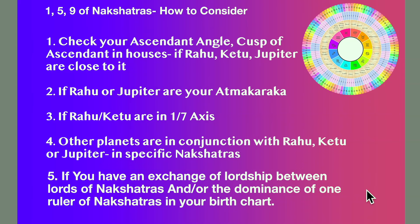The 159th aspect of nakshatras is important to consider, and we'll tell the rules of why it is so. Check your ascendant — Rule Number 1: the cusp of your ascendant, whatever planet is close to the ascendant, especially if it is Rahu, Ketu or Jupiter that are close to that cusp, close to your ascendant angle. That's the first rule.